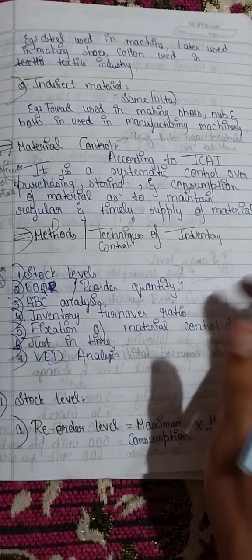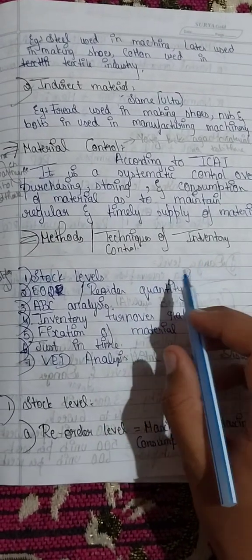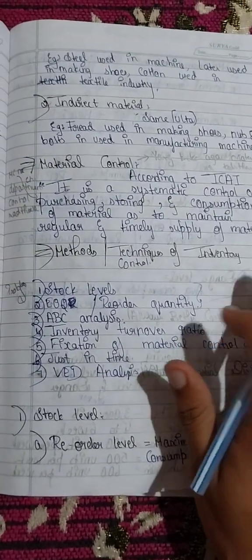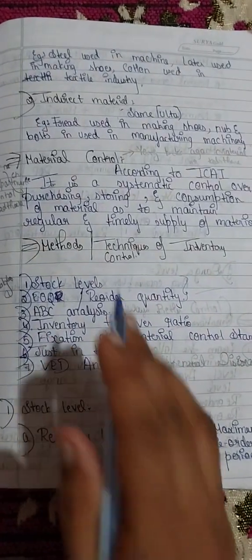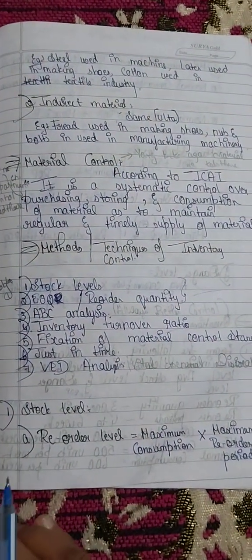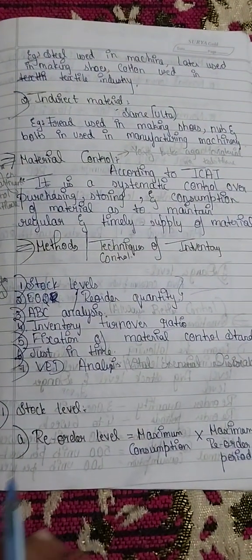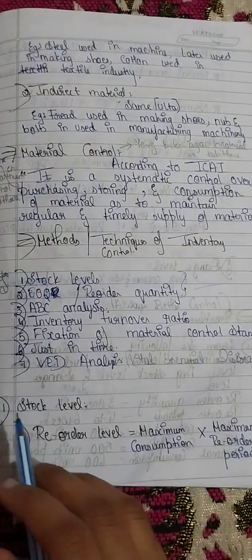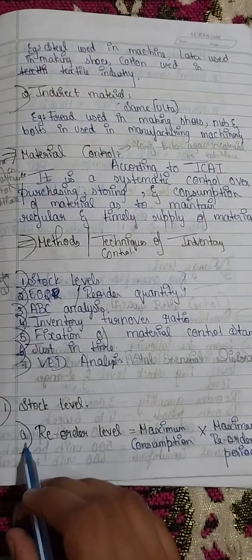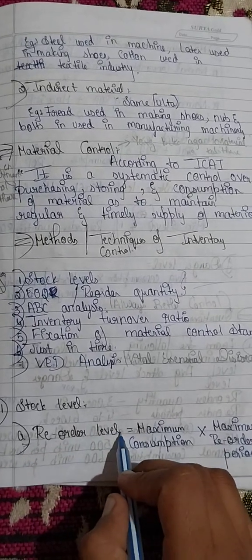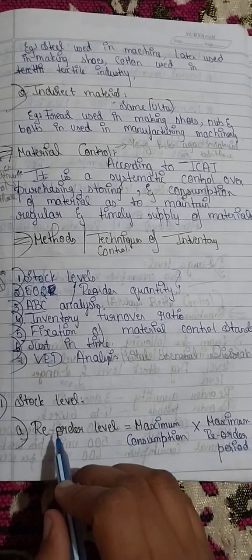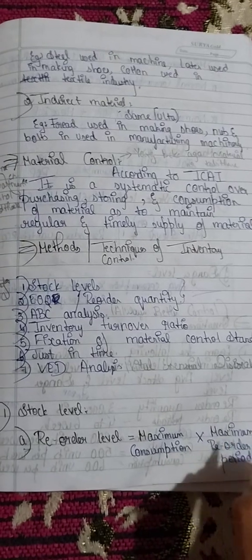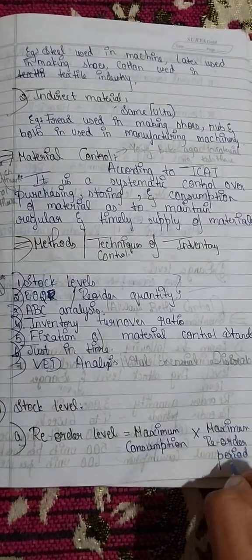Stock level and reorder quantity is worth 4 marks. Under stock levels, the sub-points are: first is reorder level. Reorder level is calculated as maximum consumption multiplied by maximum reorder period.